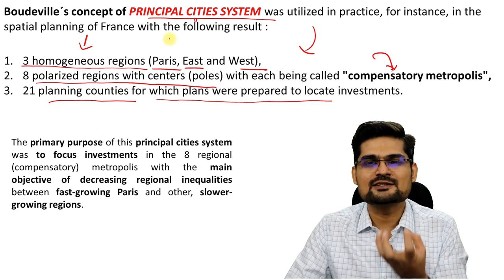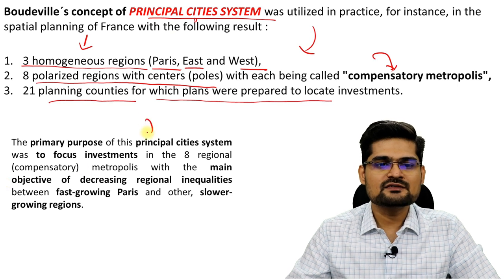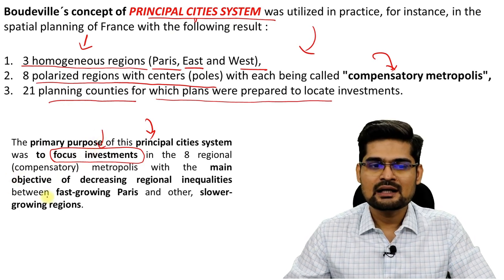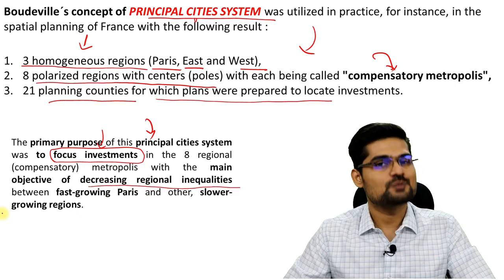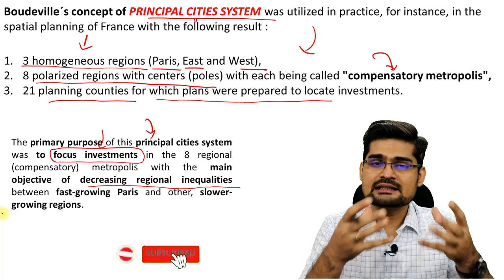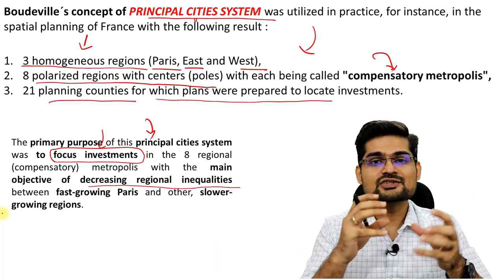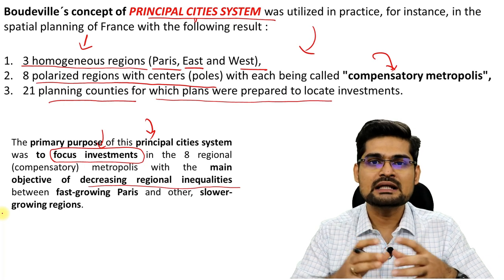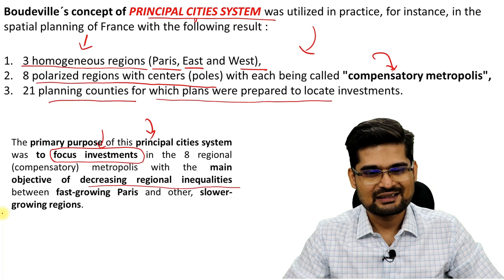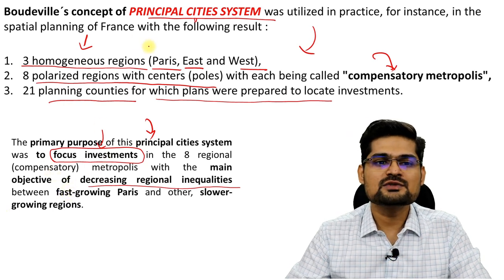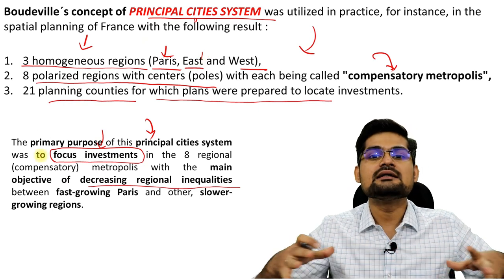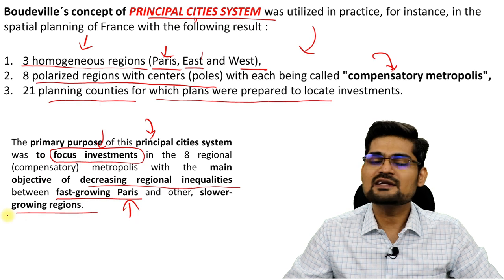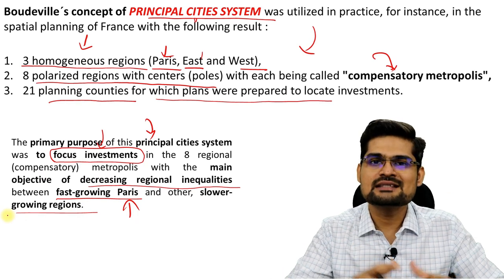The primary purpose of this principal city system was to focus investments. Ultimately, investments would matter in these areas for larger development, and the objective was decreasing regional inequality and disparity. Boudeville did not just study a theory of corporatism like growth pole — he questioned these regional inequalities and polarized spaces and tried to develop an idea where polarization could end and overall development could happen. The idea was to reduce regional inequality from just a few centers like Paris and East and West France to other centers and counties as well, because fast-growing Paris had a great advantage over others. He wanted a parity of growth — that's why the principal city system was given.